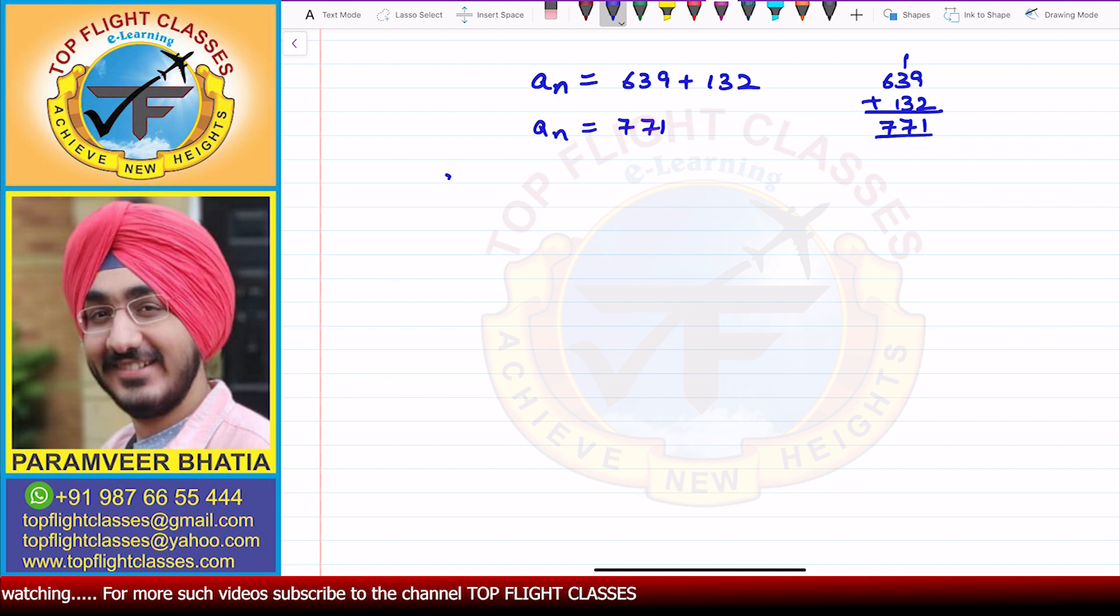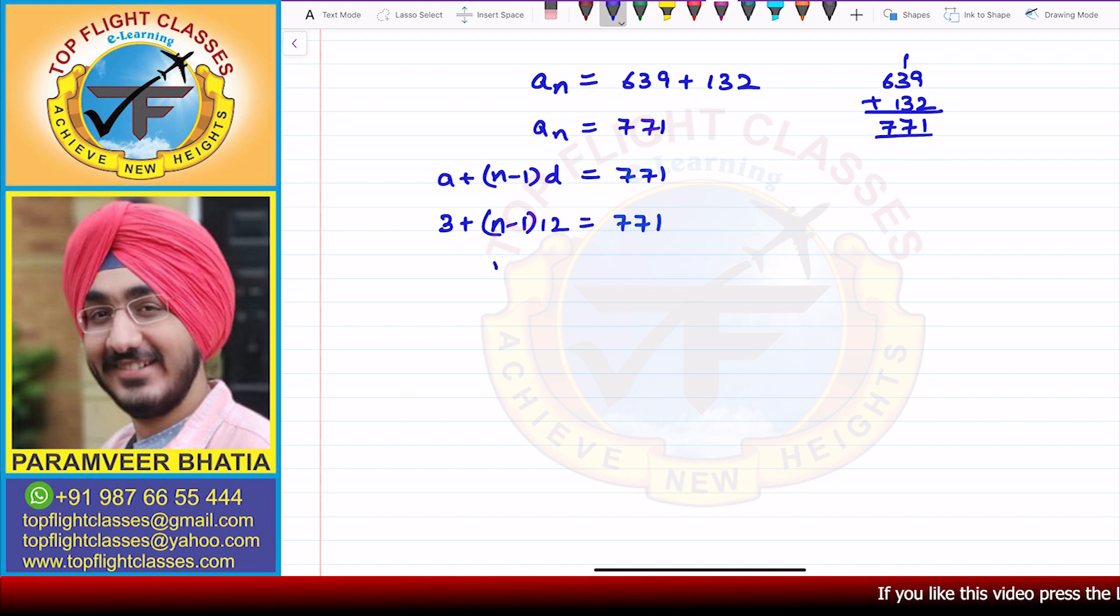Now, the AN formula is A plus (N minus 1) times D, which equals 771. So here, A is 3, N we have to find, and D is 12. That equals 771. So (N minus 1) into 12 equals 771 minus 3, which gives me 768.